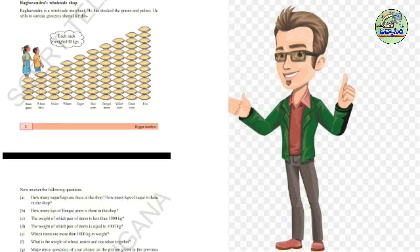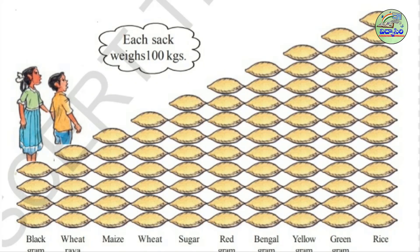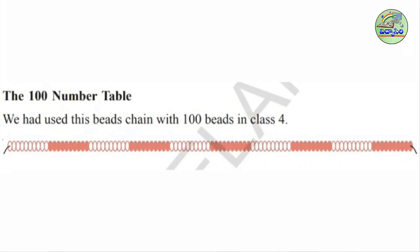Before entering the topic, let me recall what we learnt yesterday. Yesterday we learnt about Ragevindra's hotel shop, and we did some problems on this picture reading. I think you remember the picture reading. We had used this bead scene with 100 beads in class 4, and we did some operations using these beads.